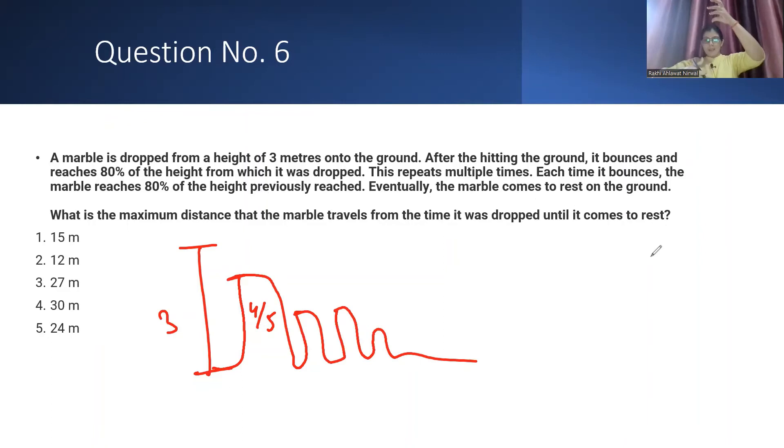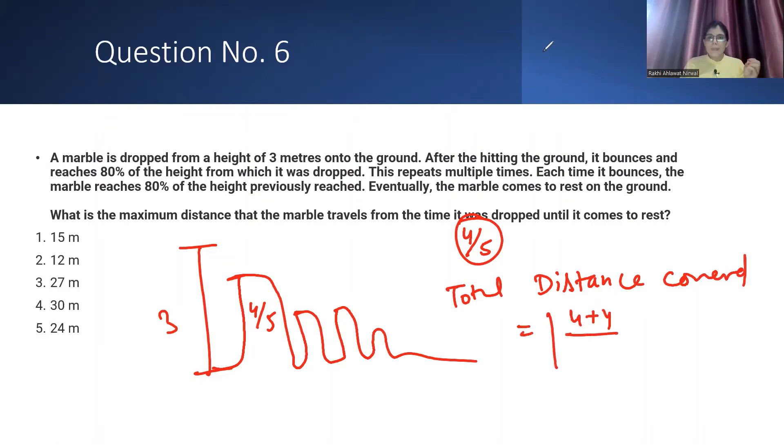What is the maximum distance that the marble travels from the time it was dropped until it comes to rest? You have to find the distance when it bounces back to 4 by 5, comes back, then 4 by 5 of that height, bounces back again. You have to find the distance until it comes to rest. This will be an infinite level. You can solve this using sum of infinite series. Otherwise, for these type of questions, there's a wonderful trick. The bounce back is 4 by 5. If you want total distance covered by ball, it will be 4 plus 5 in the numerator, 4 minus 5 in modulus in the denominator, times the initial height. 4 plus 5 is 9, 4 minus 5 modulus is 1, times initial height 3. Answer is 27 meters.